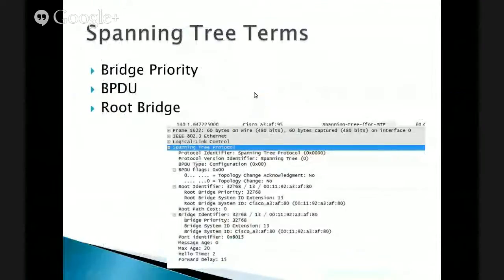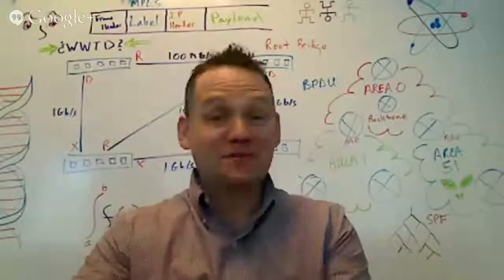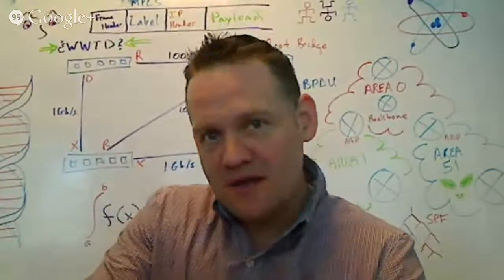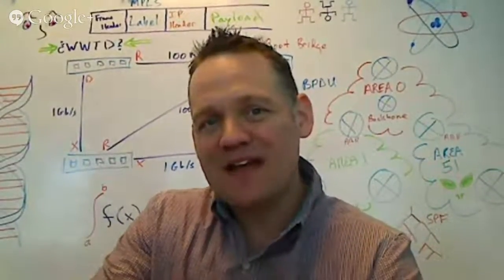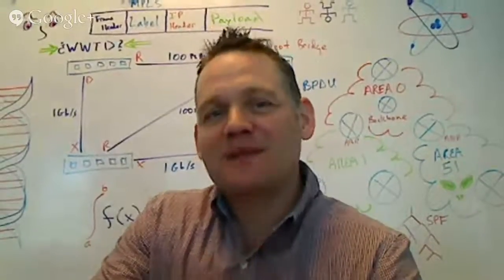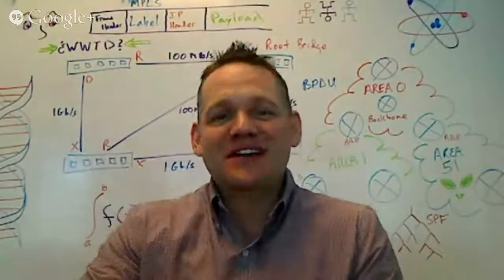So, bridge priority — the bridge with the lowest priority becomes the root bridge. The root bridge is the reference point; everything in the loop is relative to it. Normally a loop has no beginning and end, so we have to define that point — that's what the root bridge is. I told you it wasn't going to be too long, but those are important concepts. Understand what spanning tree is, why we have spanning tree, and what happens when you have a bridge loop. We'll see you guys in a little bit — study hard.